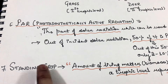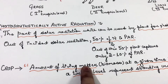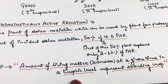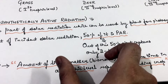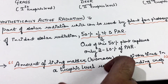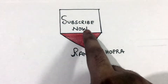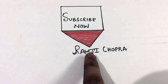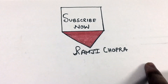What is standing crop? The amount of living matter or biomass present at a given time in a trophic level represents the standing crop. If you have gained something from this video, do subscribe to my channel Ramji Chopra, comment, like, and share.